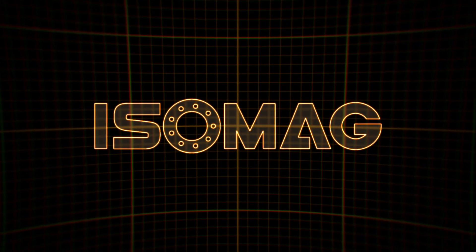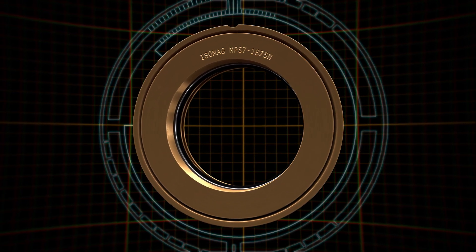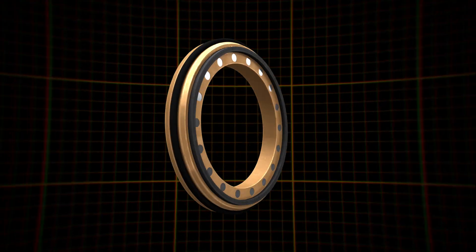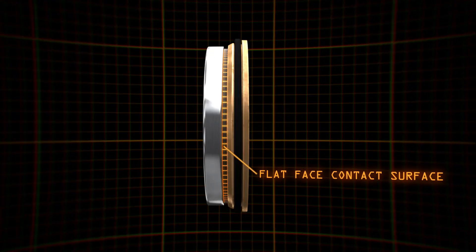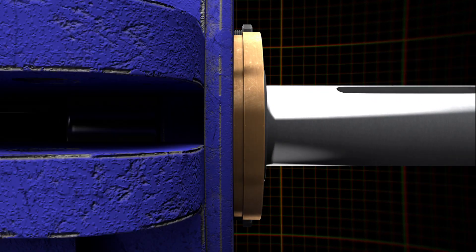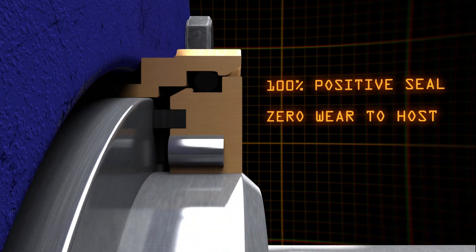Enter Isomag. Our seals close the leak path inherent to labyrinth seals by incorporating a magnetically energized flat face contact surface, creating a positive internal seal without wearing the host equipment.